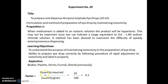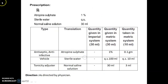The factor is calculated as quantity required upon quantity given, that is equal to 10 upon 100, which equals 0.1. The prescription given: atropine sulfate 1%, sterile water quantity sufficient, normal saline solution 30 ml.